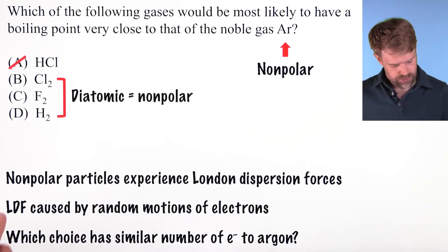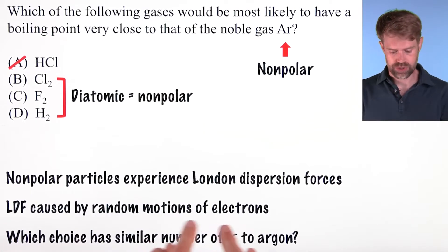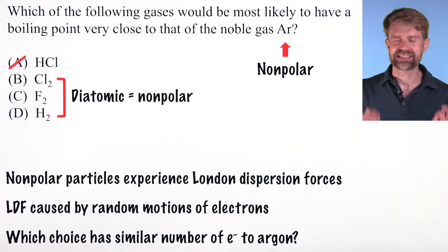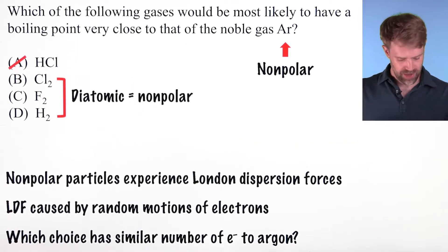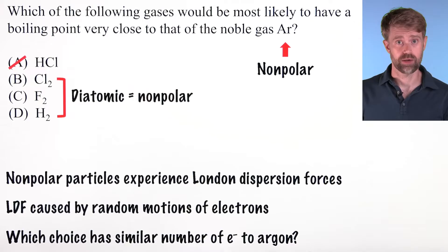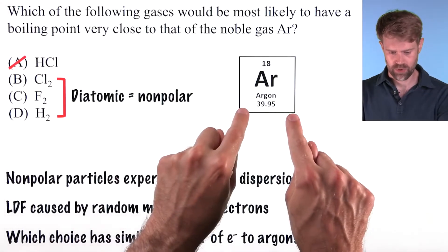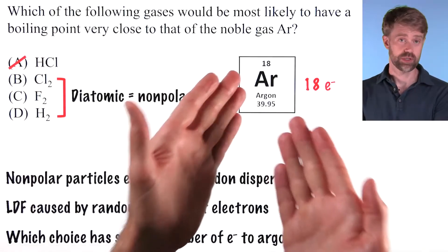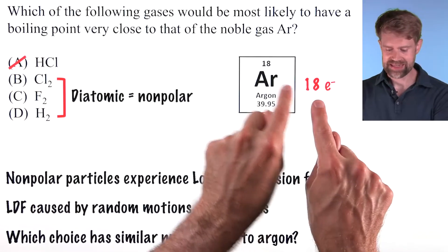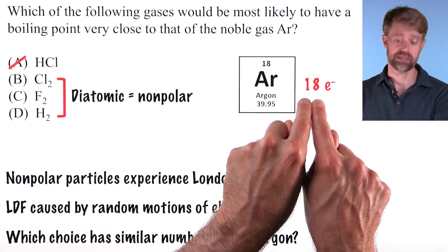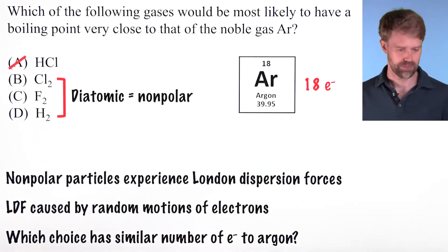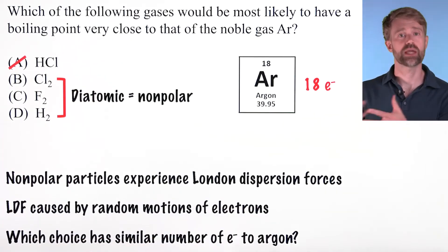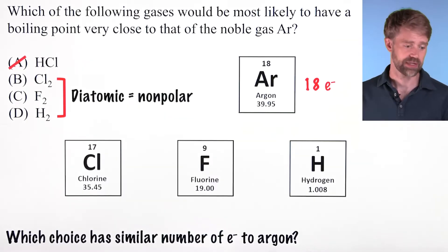We want to figure out which of these molecules has similar London dispersion forces to argon. Since LDFs are caused by the motions of electrons, we're looking for an answer choice with a similar number of electrons to argon. Looking at the periodic table, argon is element number 18, and because it's electrically neutral, it has 18 electrons. So 18 is our magic number — whichever diatomic element has closest to 18 electrons is going to be our correct answer.